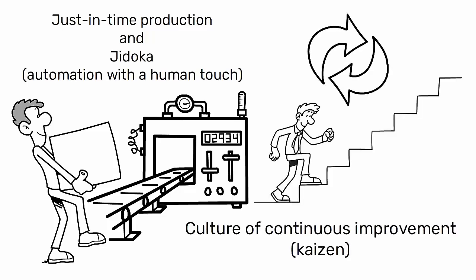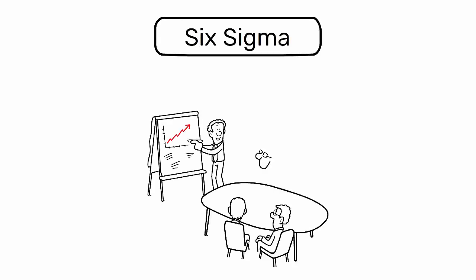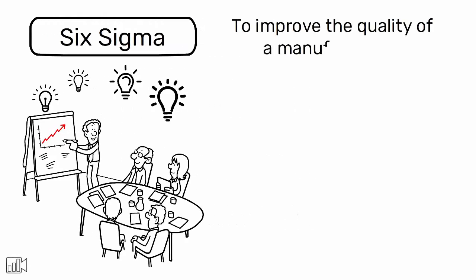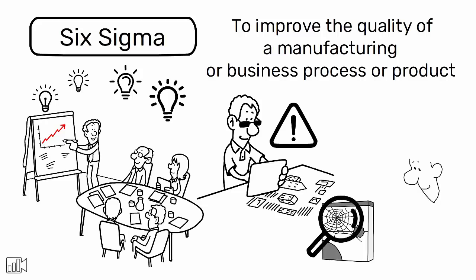Six Sigma, on the other hand, is a structured business strategy used as a problem-solving method that seeks to improve the quality of a manufacturing or business process or product by identifying and removing the cause of defects or errors related to variability in process, product design, and component parts.